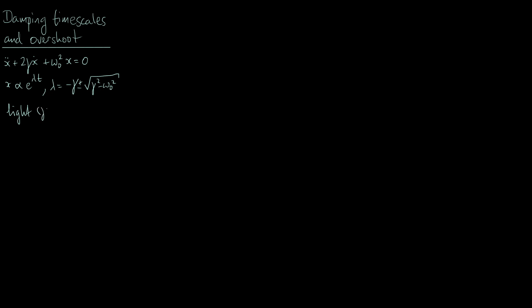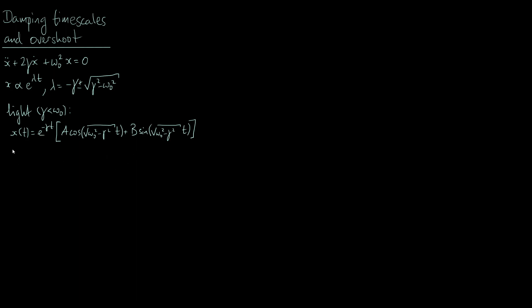When gamma is less than omega-naught, the general solution for the light damping case is: x as a function of time equals e to the minus gamma t, times a constant A times cos of the square root of omega-naught squared minus gamma squared times time, plus B times sine of the same thing. These constants A and B depend on the initial conditions.